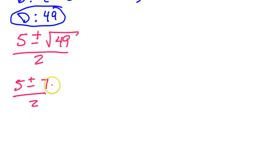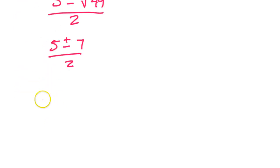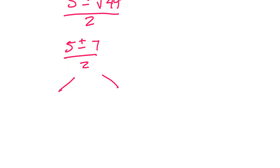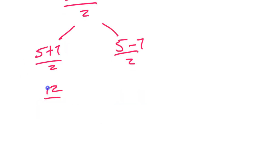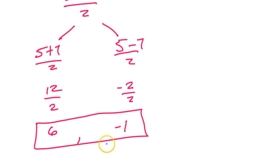Well, if there's no i and there's no radical, I'm going to get just two regular numbers. So I'm going to split this up as 5 plus 7 over 2 and 5 minus 7 over 2. So that's 12 over 2, which is just 6. And this is going to be negative 2 over 2, which is negative 1. So these are the answers to number 40, 6 and negative 1.